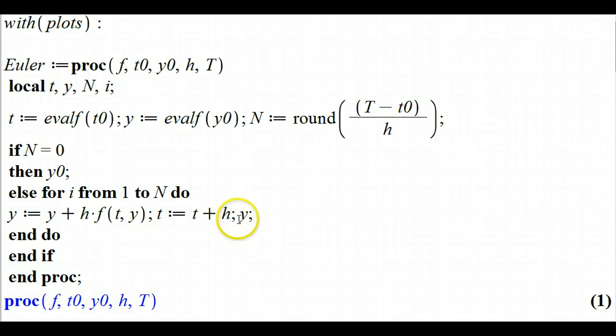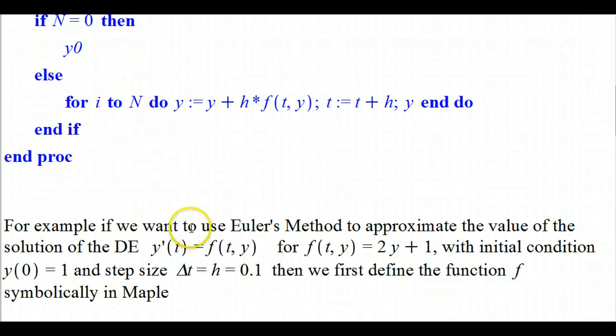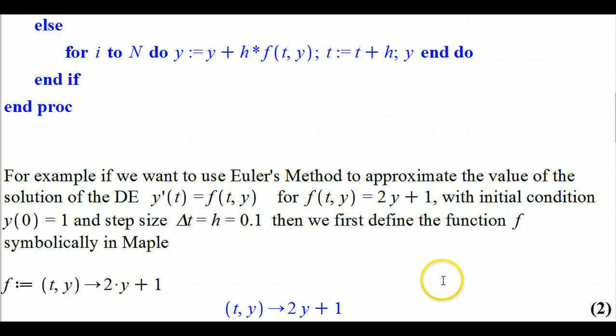The last thing computed in the body is y, which just repeats what y is, and that's going to be the last thing ejected from the procedure. Then you end the do loop, you end the if clause, end the procedure. We press enter and see the output, and then we're going to employ it.